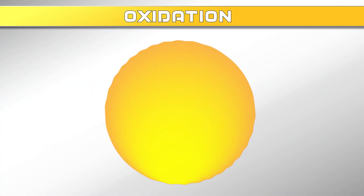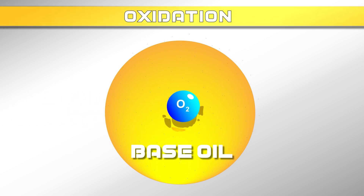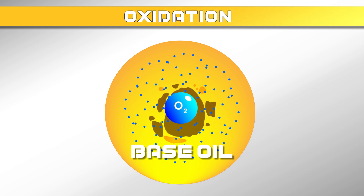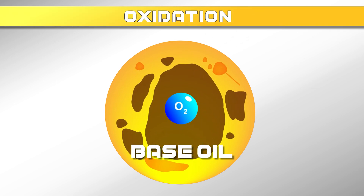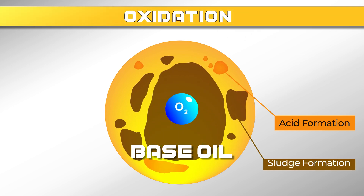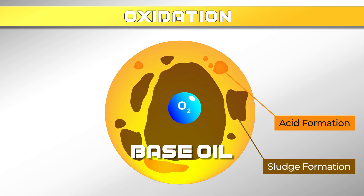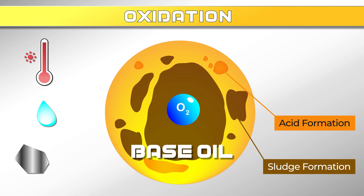Oxidation is the general attack of the weakest components of the base oil in the presence of oxygen. It ultimately causes acids to form, which result in corrosion and sludge formation. It occurs at all temperatures all of the time, but is accelerated by higher temperatures and by the presence of water, wear metals, and other contaminants.